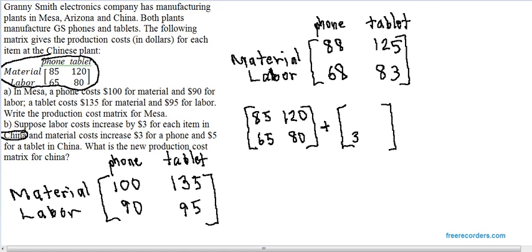So, the labor increase is $3 for each item, and the material increase is $3 for the phone, and $5 for the tablet. And so, had we added these two matrices, which is what we're studying in this lesson, we would have obtained the same answer that we already have.